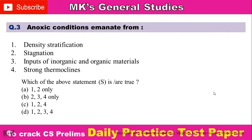Next question: Anoxic conditions emanate from — number one: density stratification, number two: stagnation, number three: inputs of inorganic and organic materials, number four: strong thermoclines. Which of the above statements are true? Option A: one and two only, Option B: two, three, four only, Option C: one, two, four, Option D: one, two, three, four. Comment your answer.